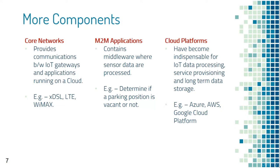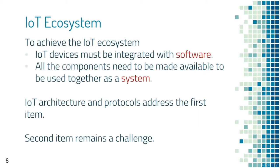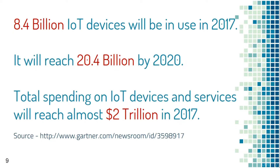Cloud platforms help with IoT data processing, service provisioning, and long-term data storage. Examples include Google Cloud Platform, Amazon AWS, and Microsoft Azure. To achieve the IoT ecosystem, two major steps are required: all IoT devices must be integrated with software, and all components need to be made available to work together as a system. IoT architecture and data exchange protocols address the first item, while the second remains a significant challenge.